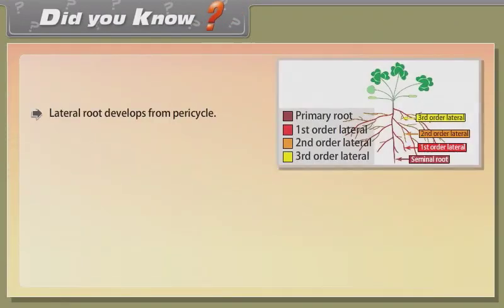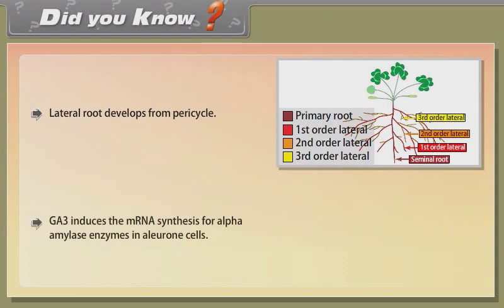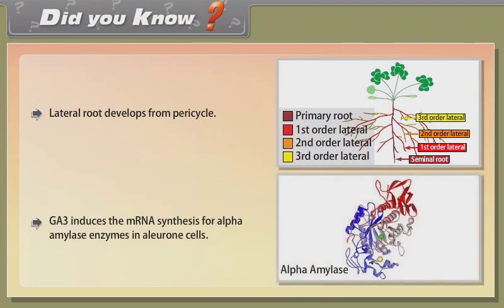Did you know? Lateral root develops from pericycle. GA3 induces the mRNA synthesis for alpha-amylase enzymes in aleurone cells.